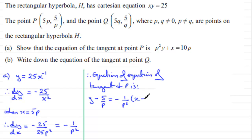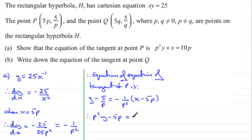To get rid of the fractions, I'm going to multiply through by p². That gives us p²y, then minus 5p on the left, and on the right we're just left with minus 1 times the bracket, giving minus x plus 5p. Adding x to both sides and adding 5p to both sides, we end up with what we had to prove: p²y + x = 10p.